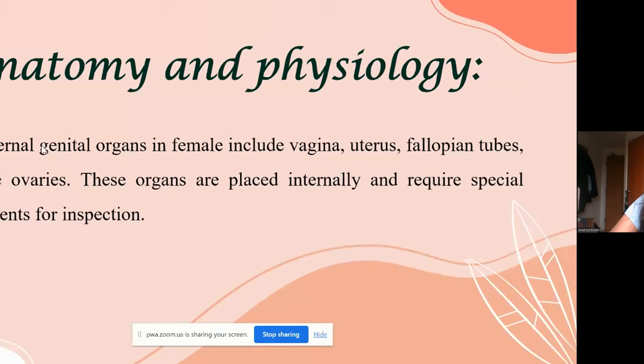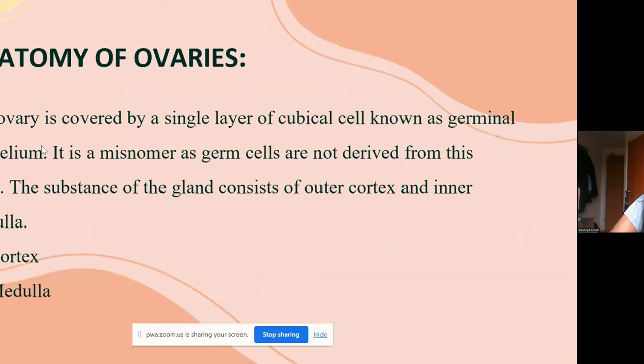On the anatomy and physiology slide: women have internal genital organs that include the vagina, uterus, fallopian tubes, and ovaries. The ovary has a single layer of cuboidal cells known as germinal epithelium — this is a misnomer, as this layer is not the origin of germ cells. The substance of the gland consists of an outer cortex and inner medulla.